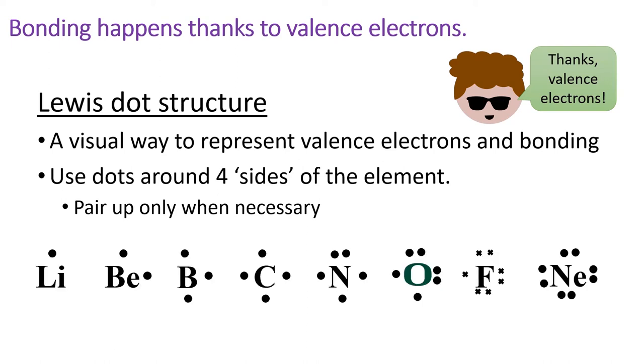In the Lewis dot structure, valence electrons are indicated as dots around the element symbol. When we draw the Lewis dot structure, it doesn't matter which side we start adding dots to. What does matter is that we only start pairing up the dots once we have to.